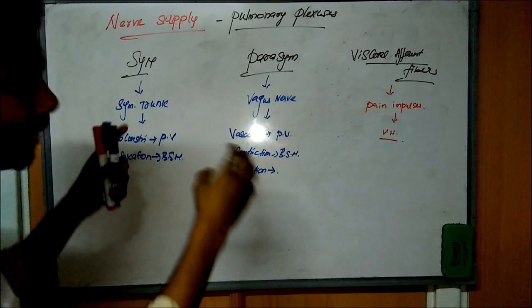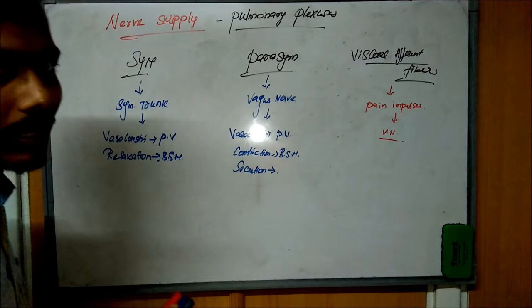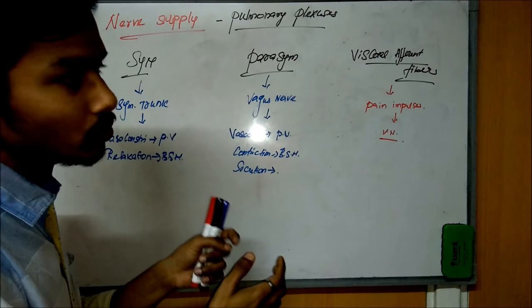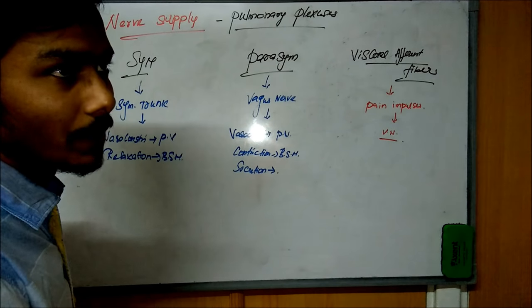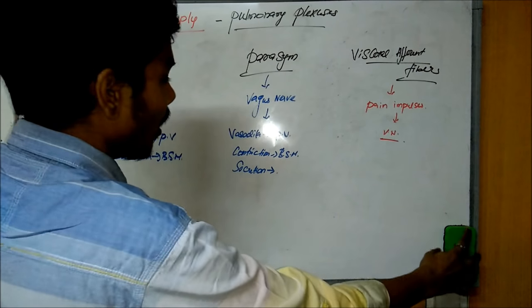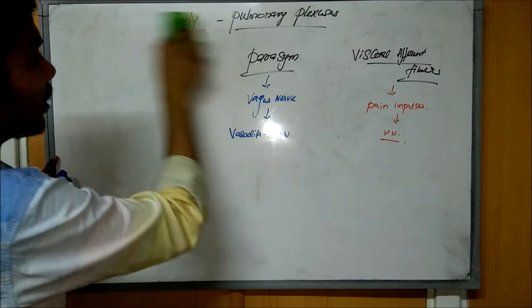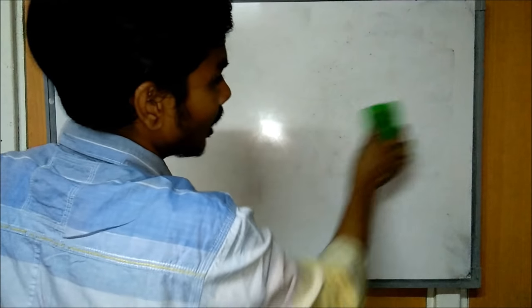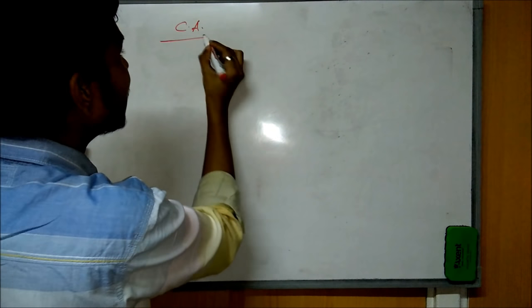The lungs are covered by the pleura — we have a visceral pleura and a parietal pleura. Between the pleura there is a serous fluid used for shock absorption during inspiration. The lungs are mainly used for respiration and are also involved in some metabolic functions, like the renin-angiotensin-aldosterone system, and other mechanisms to maintain body homeostasis.